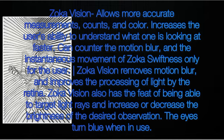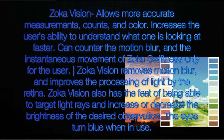Zoka vision allows more accurate measurements and counts in color, and increases the user's ability to understand what they are looking at faster. It can counter the motion blur and instantaneous movement of zoka swiftness for the user only. Zoka vision removes motion blur and improves processing of light by the retina. Zoka vision also has the feat of being able to target light rays and increase or decrease the brightness of the desired observation. The eyes turn blue when in use.